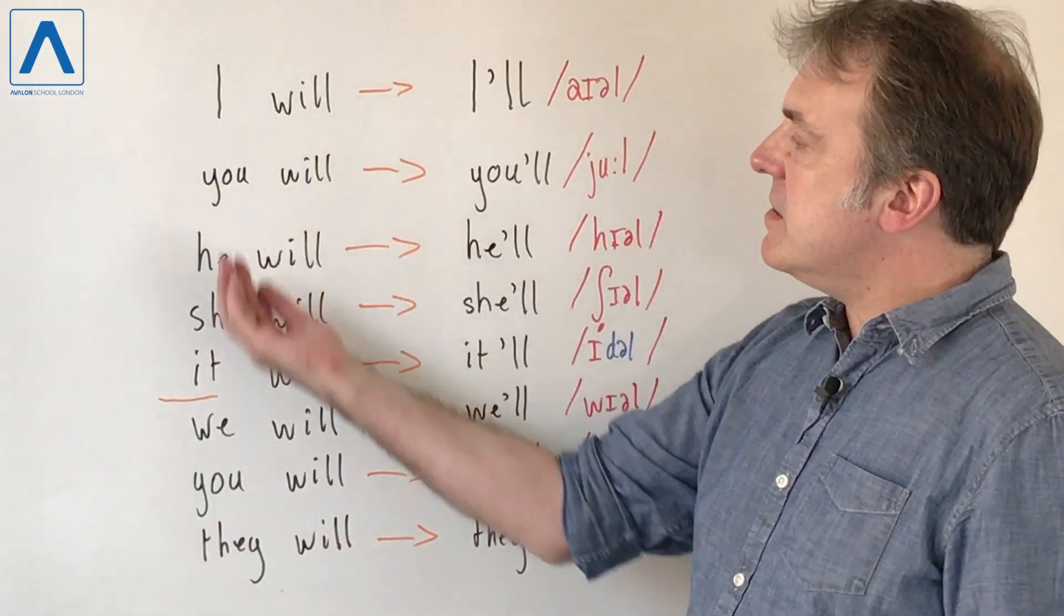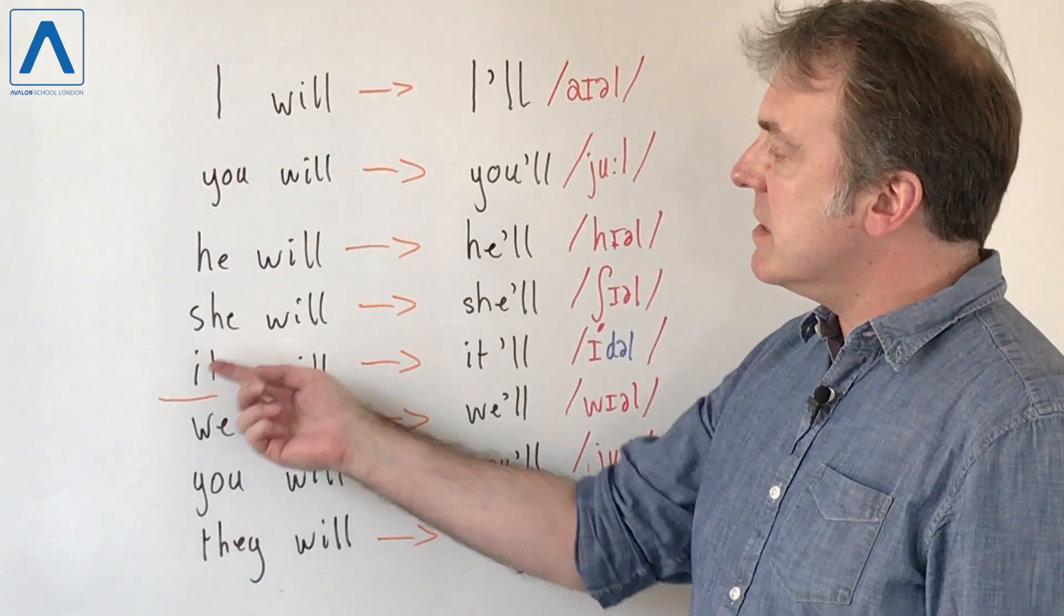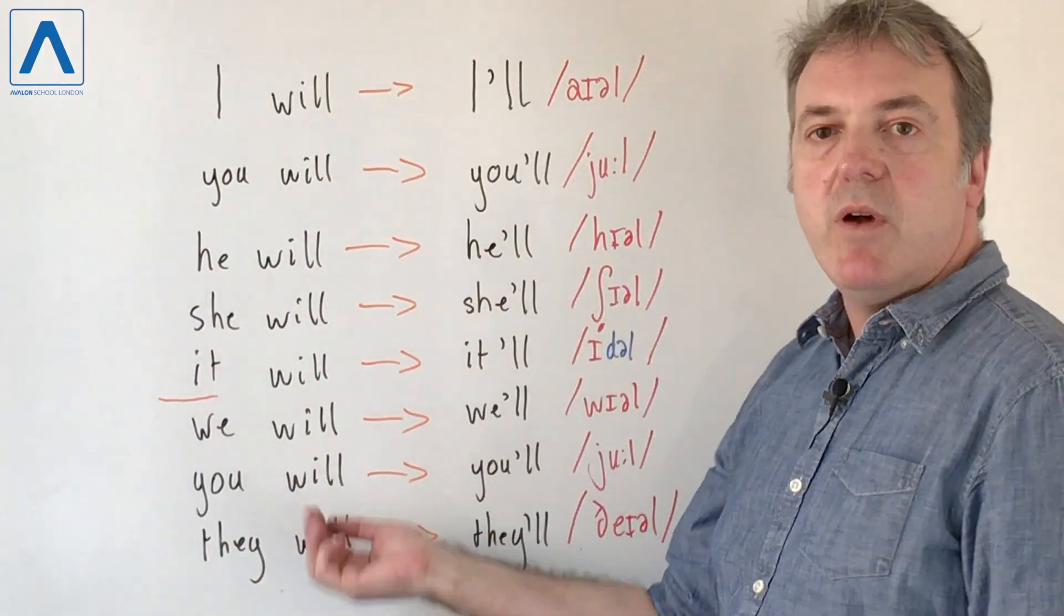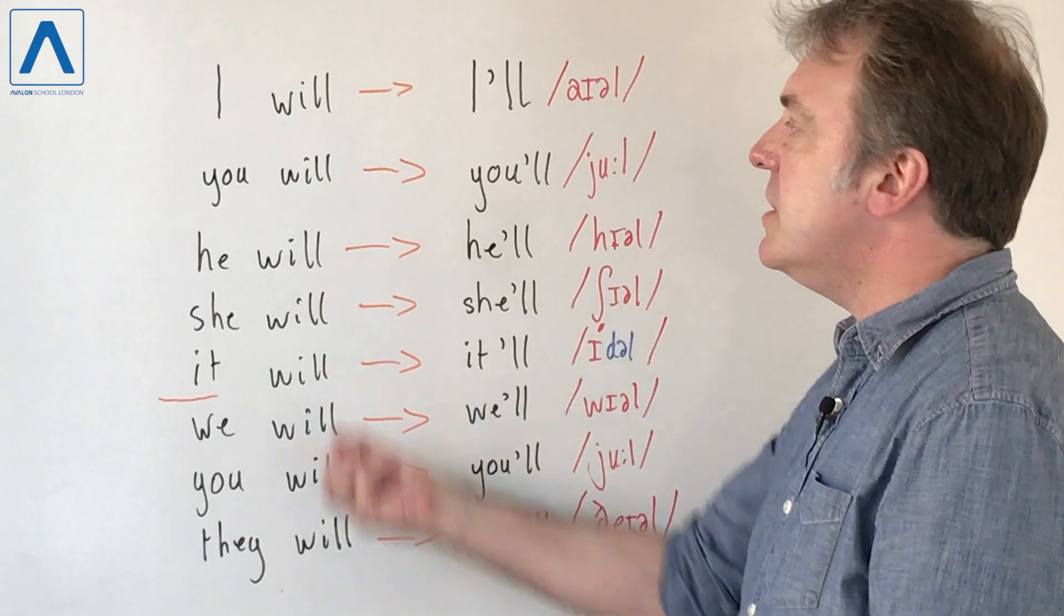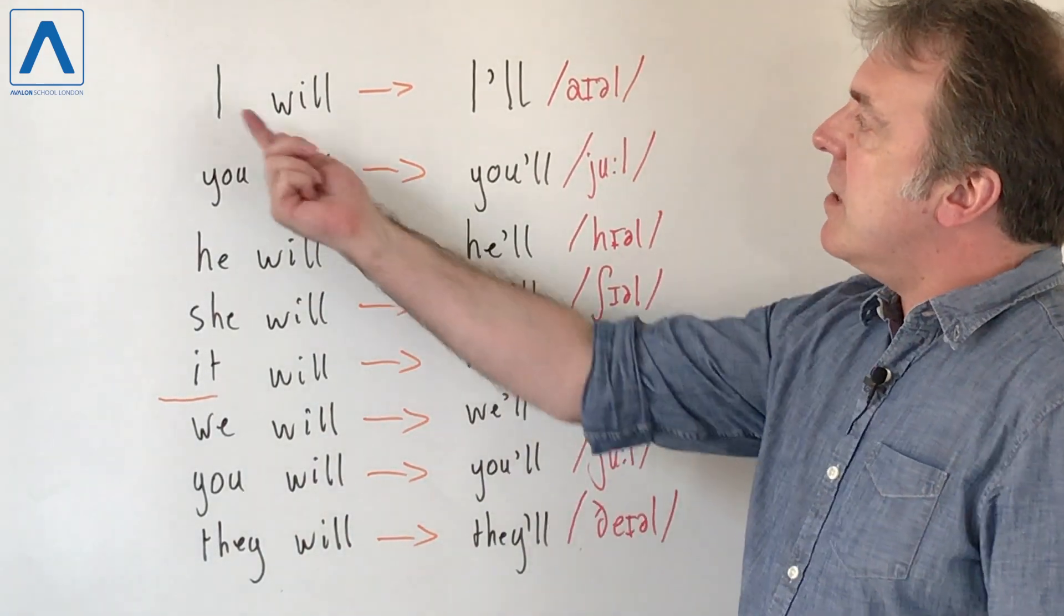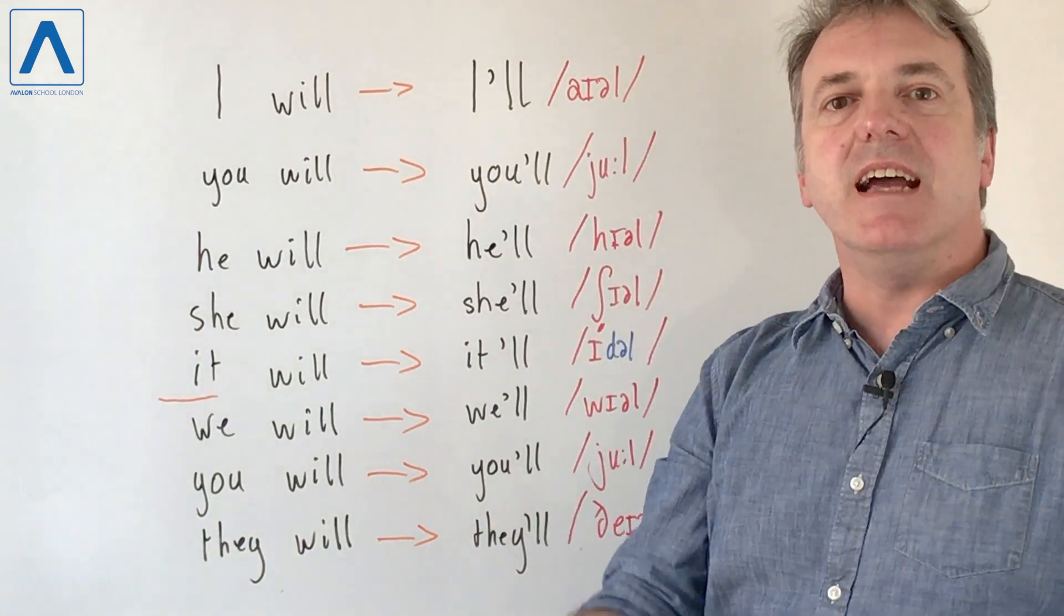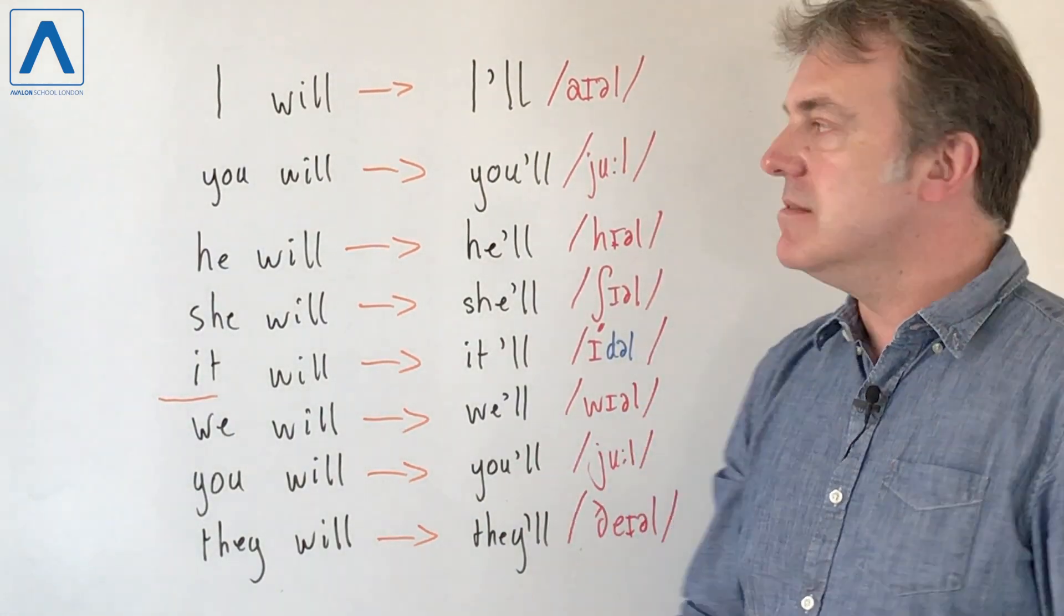Here is our list of personal pronouns with our singular and our plural and then the modal verb will which is usually used when you're speaking about the future of course. So I will becomes I'll. Repeat: I'll, I'll.